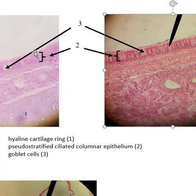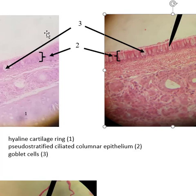The cilia push upward toward your larynx — your voice box — rather than downward into your lungs. At the voice box, your esophagus and trachea meet, so all the mucus being pushed up can then go down the esophagus and be destroyed by acid — or you can cough it up.